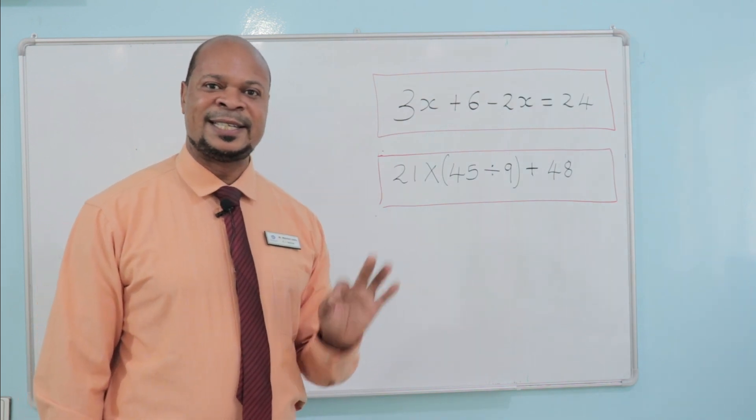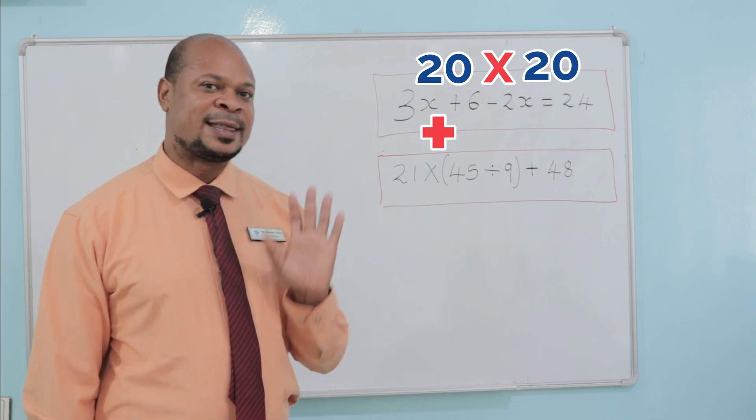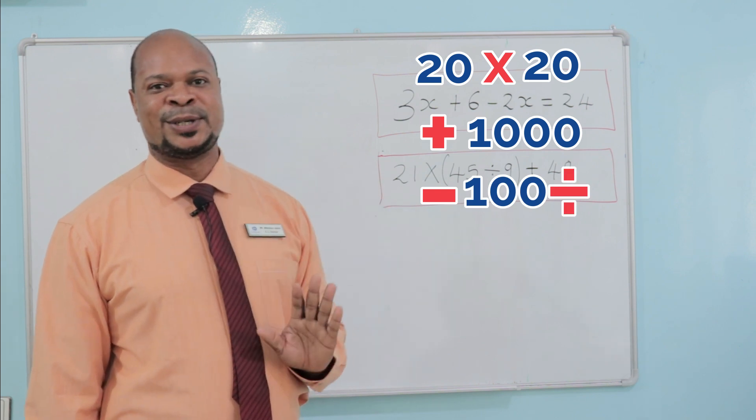Let's say it in an example. 20 times 20 plus 1000 minus 100 divided by 2, the answer is 1350.